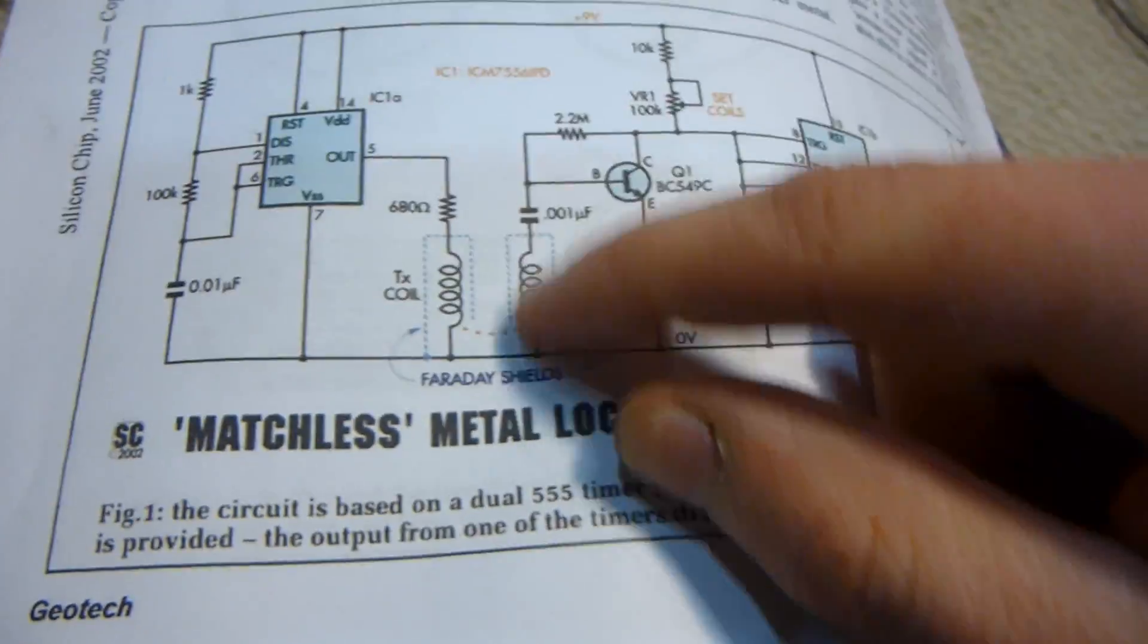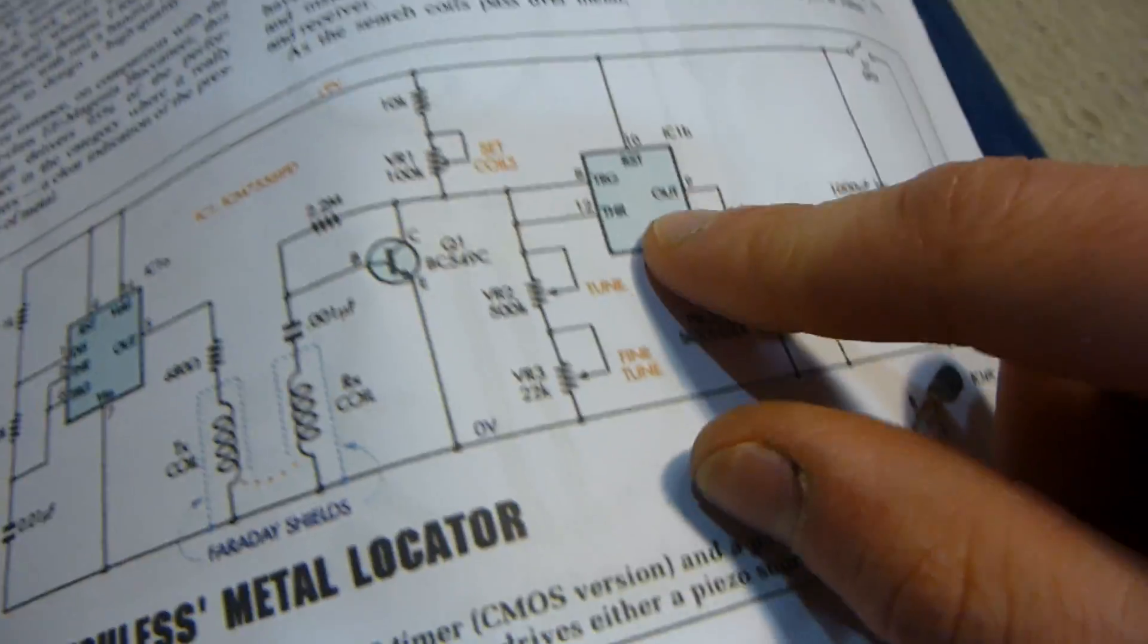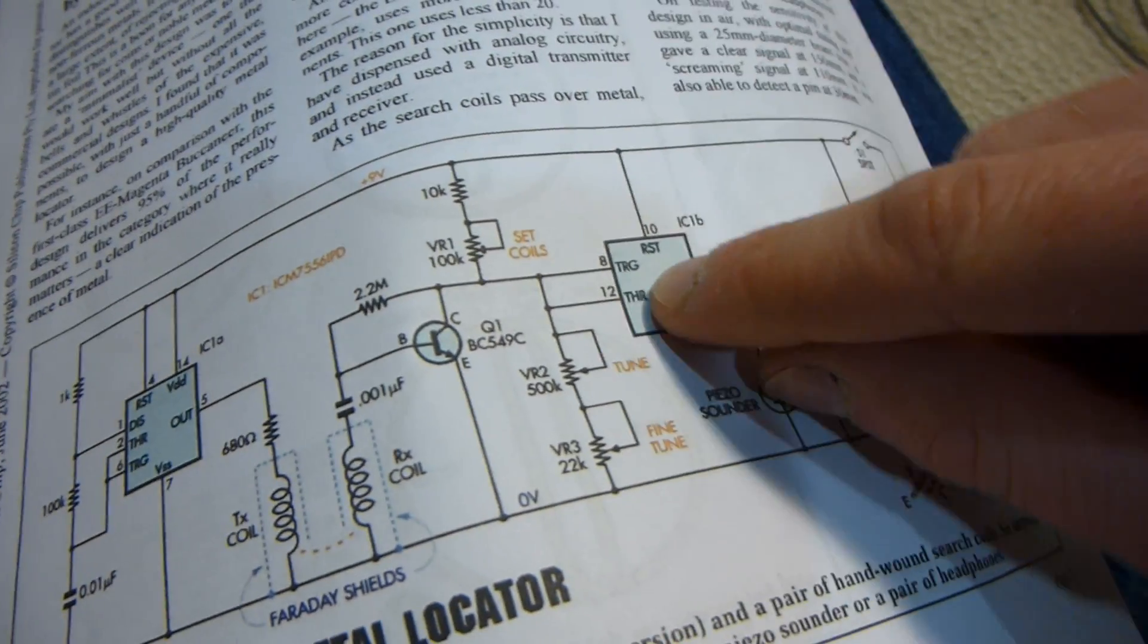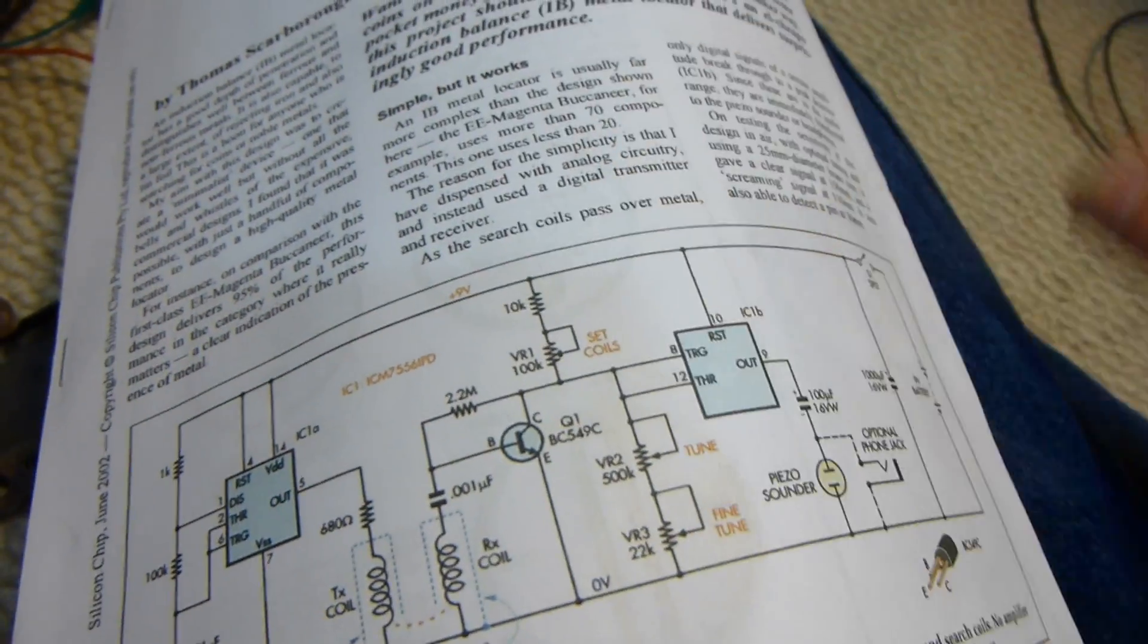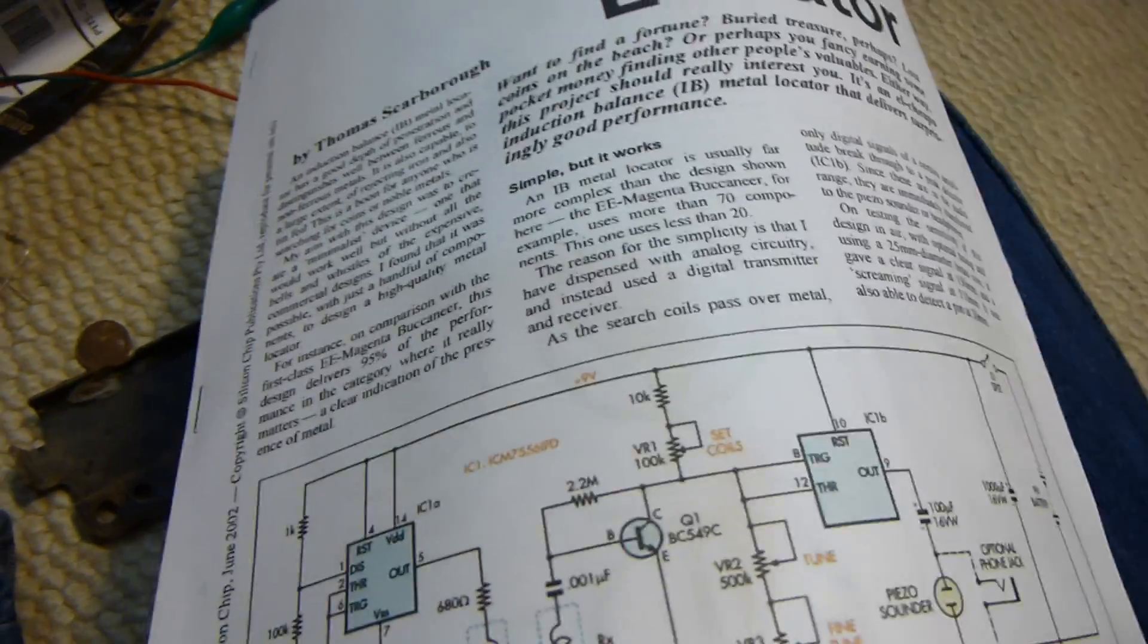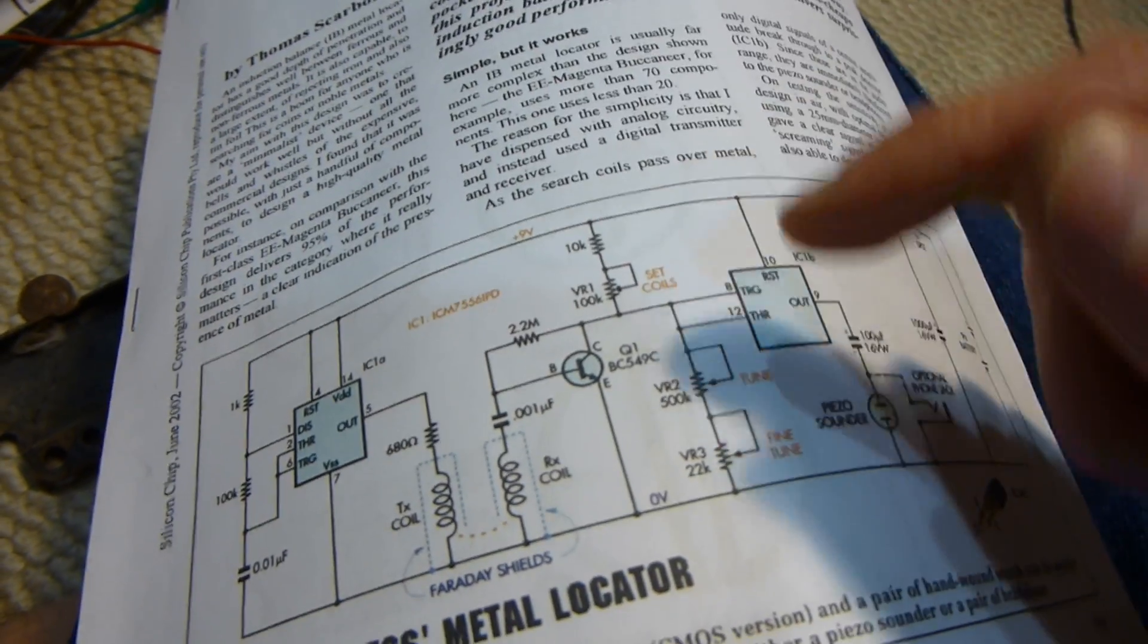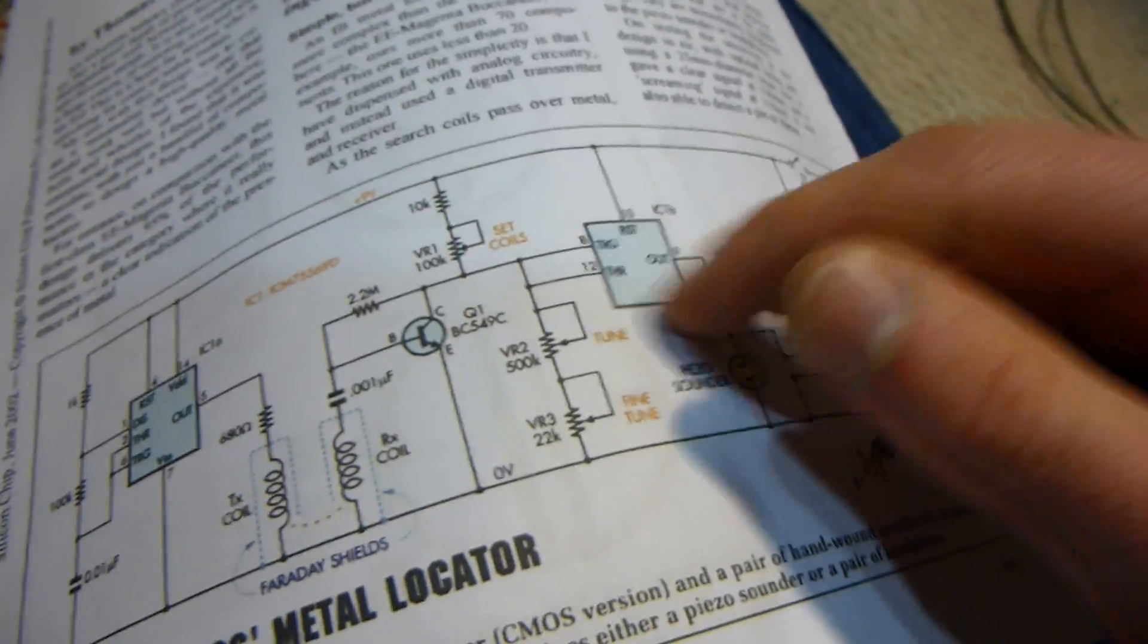And then the pickup coil, receiver coil, basically goes through a transistor amplifier, and then to this 555 timer, which is acting as a trigger and threshold. So it basically, I forget what you call it, it's kind of like when the voltage gets to a certain point, it turns on, and when it drops to below a certain point, it turns off, and then it amplifies it through the piezo disc. So, at least that's my understanding of it.